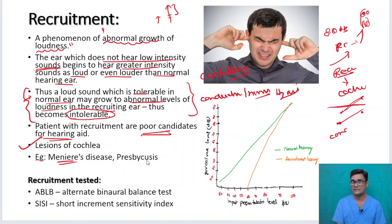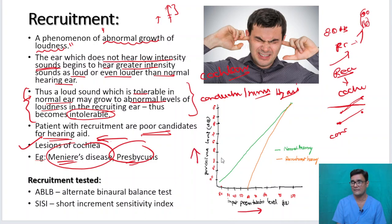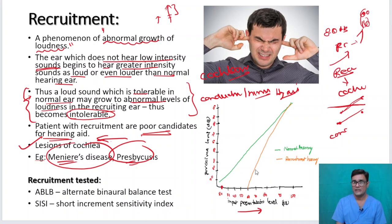Recruitment is seen in lesions of the cochlea — examples include Meniere's disease and presbycusis. Looking at this chart, the input presentation level is on one axis and the perceived level on the other. In a normal ear, 20 decibels input is heard as 20 decibels, 50 as 50 — a straight green line. For the recruiting ear shown by the orange line, at 60 decibels input the patient perceives nothing; at 70 decibels he perceives around 30 decibels, and at 100 decibels he perceives like a normal ear.